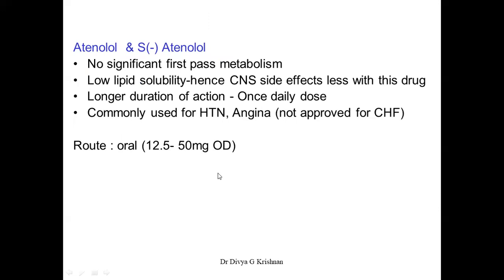Atenolol and its S-enantiomer do not show significant first-pass metabolism. The characteristic advantage of this drug is its low lipid solubility — hence it will not cross the CNS and does not produce much CNS side effects like forgetfulness. It has a longer duration of action and once-daily dosing is sufficient. It is one of the very popular antihypertensive drugs and can be used for hypertension and angina, though it is not much approved for use in congestive heart failure. The route is oral, 12.5 to 50 mg once daily.